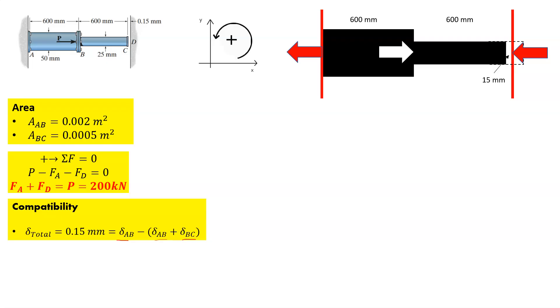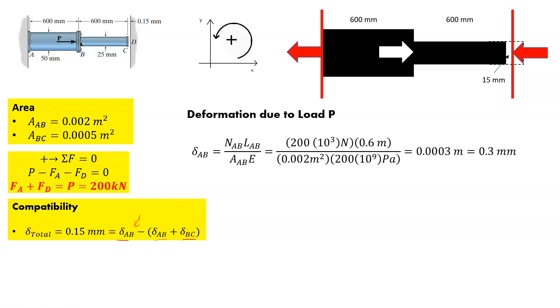So let's figure out what is going on at AB first based on that load. So if you look at the load, the deformation due to load P, here we've got the load of AB times the length of AB over the area of AB times Young's modulus. So that's the 200 kilonewtons. K is just 10 to the third and 0.6 meters length. And then this cross-sectional area 0.002 meters squared and 200 gigapascals or 10 to the ninth pascals.